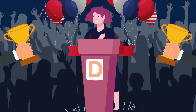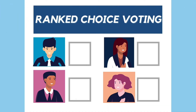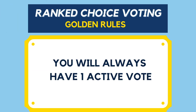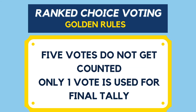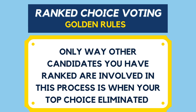That's how ranked choice voting works. Remember the golden rules: you will always have one active vote — only one vote gets counted, not multiple. Whichever vote you have that gets counted will be the one used for the final tally. Other candidates you've ranked only become involved when your top choice candidates are eliminated because they did not receive enough votes.